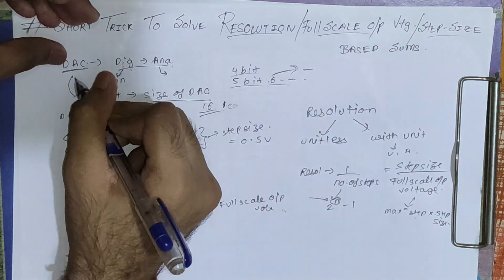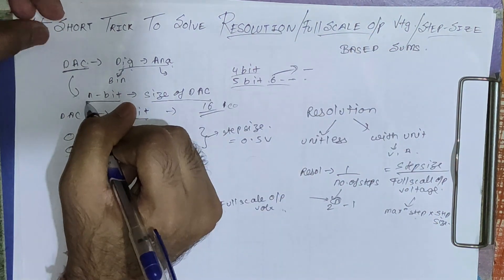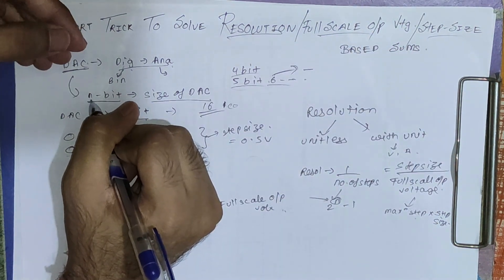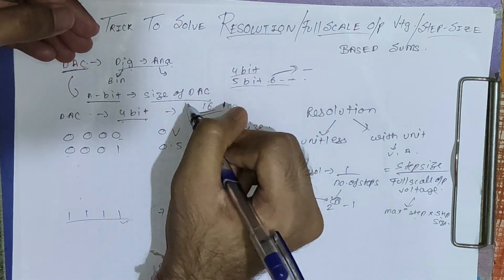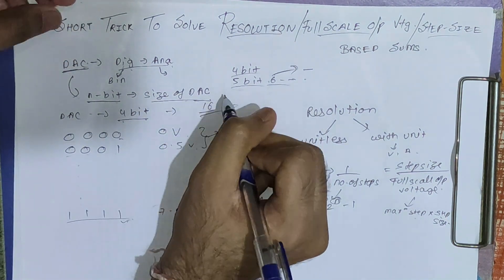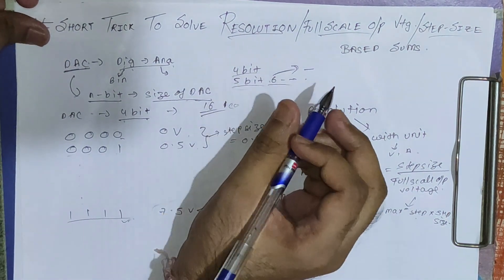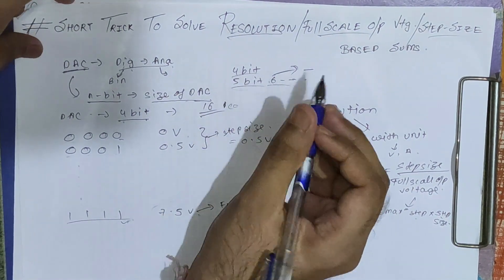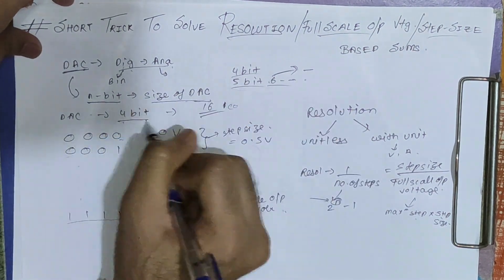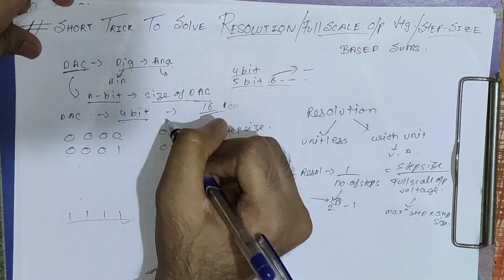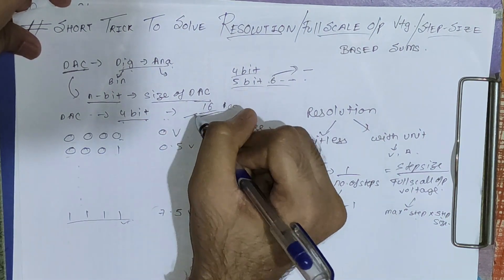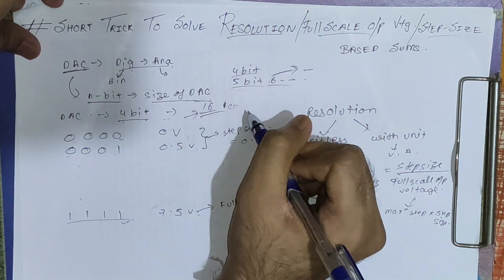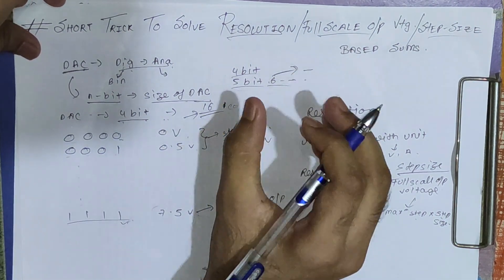In general, we can say the DAC can be of N-bit, which tells us the size of the DAC. So if we have a 4-bit DAC, it can support 16 combinations of input.